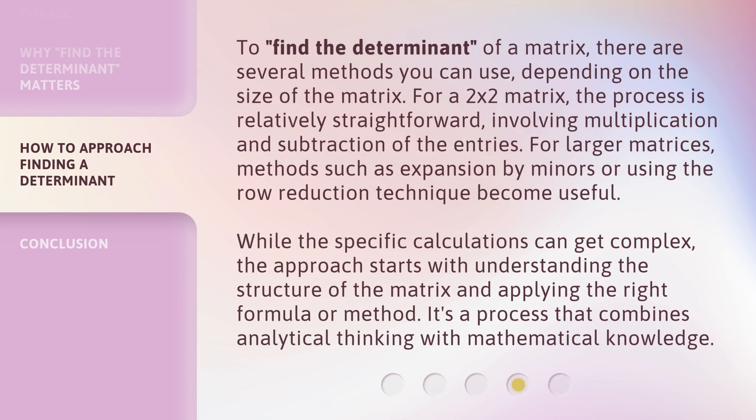To find the determinant of a matrix, there are several methods you can use, depending on the size of the matrix. For a 2x2 matrix, the process is relatively straightforward, involving multiplication and subtraction of the entries. For larger matrices, methods such as expansion by minors or using the row reduction technique become useful.